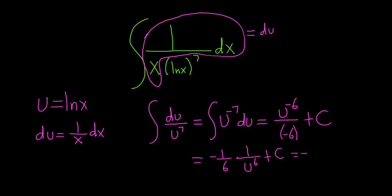The last thing to do is rewrite the u. So u is ln x. So this is 1 over ln x to the 6th. And then we have our big capital C. And that should be the final answer.